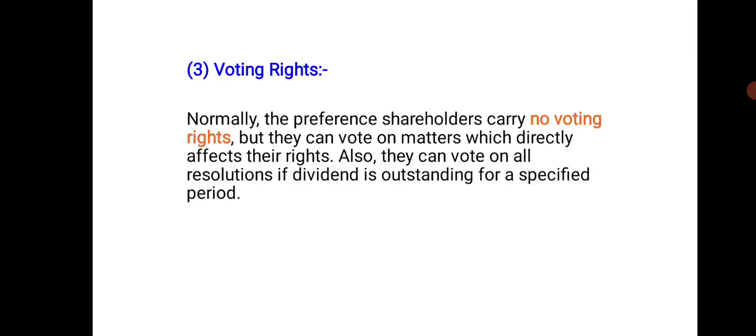Third, voting rights. Generally, preference shareholders carry no voting rights, but they can vote on matters which directly affect their rights. Also, they can vote on all resolutions if the dividend is outstanding for a specific period — if their dividend has been pending or outstanding for two or more years, they get voting rights on all resolutions.